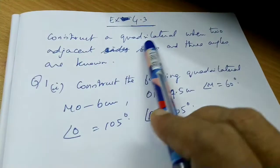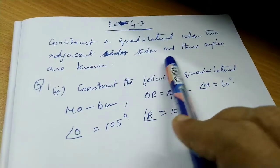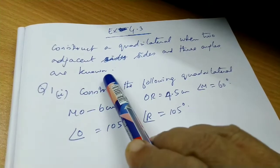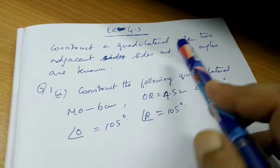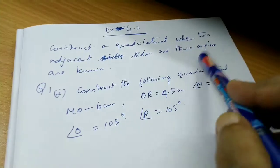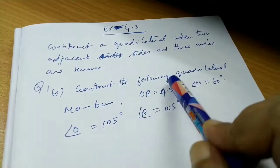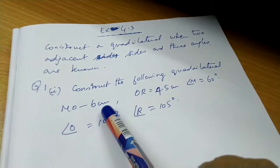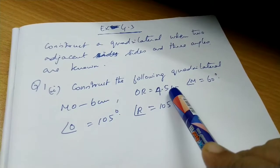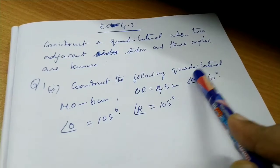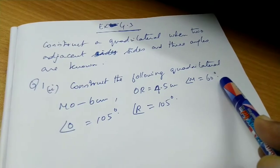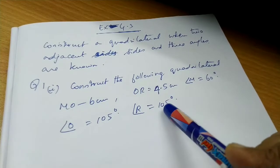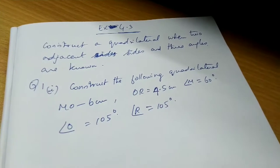Exercise 4.3: Construct a quadrilateral where two adjacent sides and three angles are known. MO is equal to 6cm, OR is equal to 4.5cm, angle M is equal to 60 degrees, angle O is equal to 105 degrees, and angle R is equal to 105 degrees.